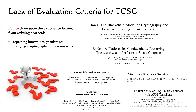Although various TEE-based confidential smart contract protocols have been proposed, newly released projects may fail to draw upon the experience learned from existing protocols, such as repeating known design mistakes or applying cryptography in unsecured ways. In this paper, we aim to abstract a high-level framework to simply and clearly systemize the knowledge on current TCSC schemes, capturing common features, properties, and potential security vulnerabilities.